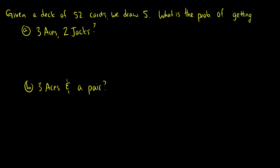Now let's do a combinatorics problem — this is why I did the counting review. Given a deck of 52 cards, we draw five. What is the probability of getting three aces and two jacks? The event is: out of the four aces we choose three, and out of the four jacks we choose two. The sample space is all possible combinations of five cards drawn from 52. So the probability is four-choose-three times four-choose-two, all over 52-choose-five.